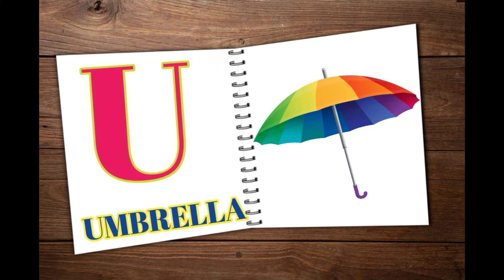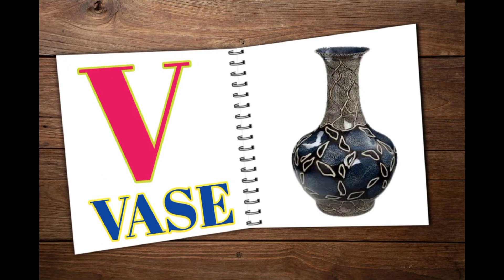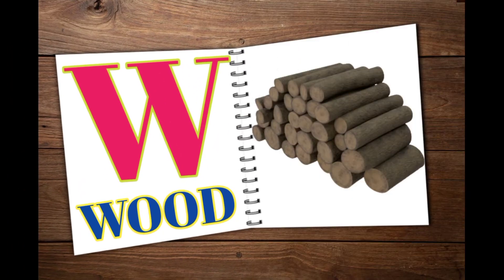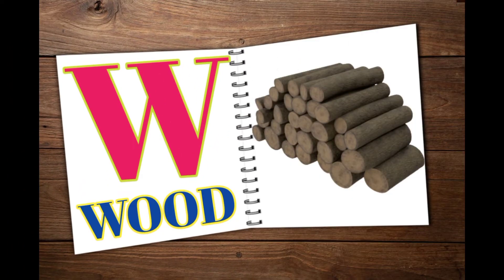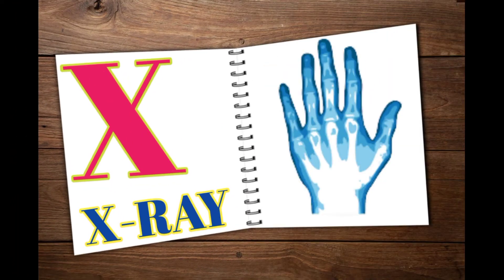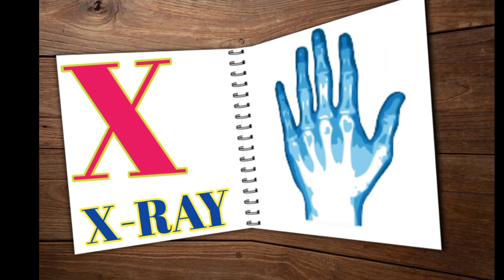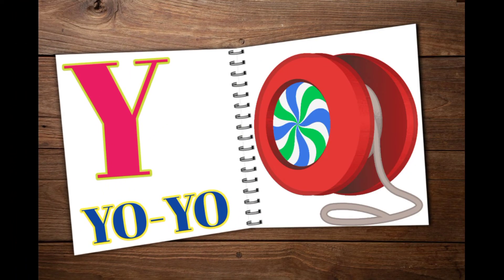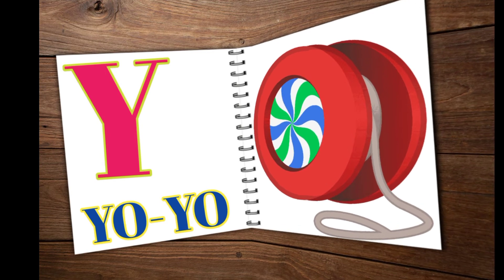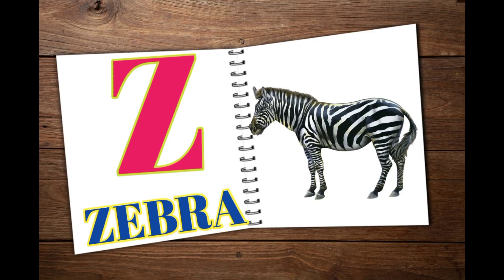U for umbrella, Y for west, W for wood, X for x-ray, Y for yo-yo, Z for zebra.